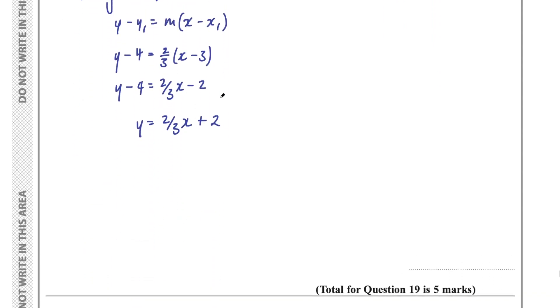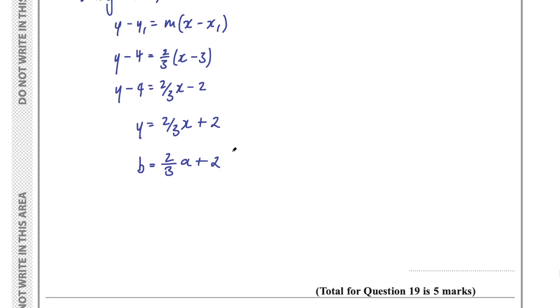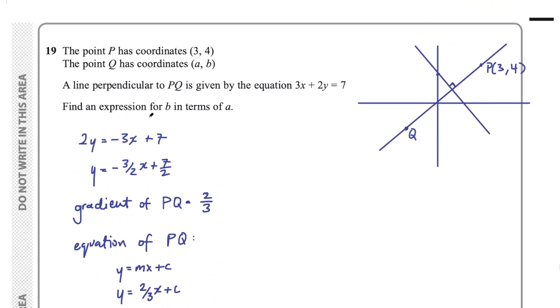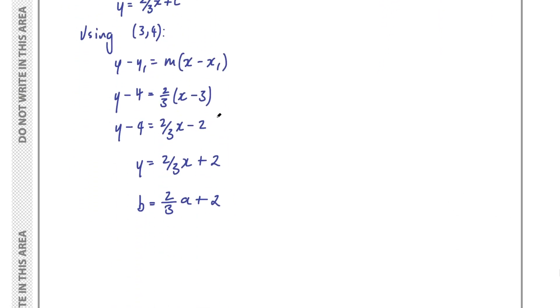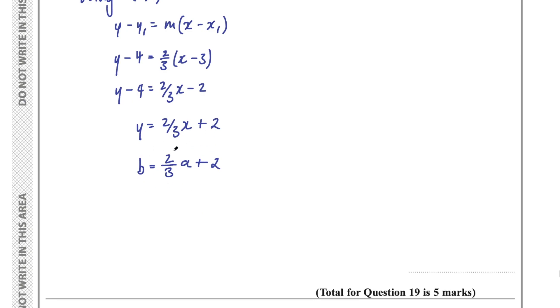So we would say then that y is B, x is A, so we'd have 2 thirds A plus 2. And again, going back to the question, it says find an expression for B in terms of A. That would be our expression, 2 thirds A plus 2.